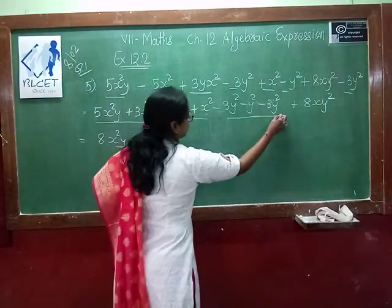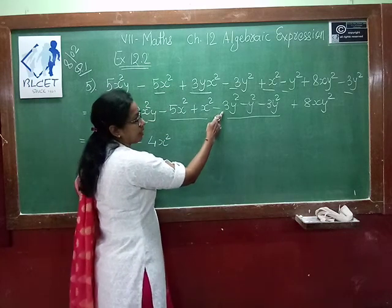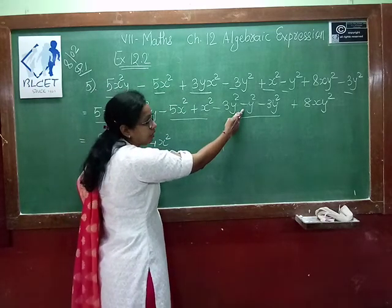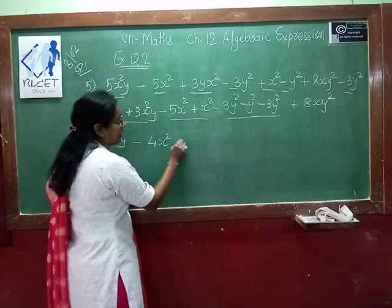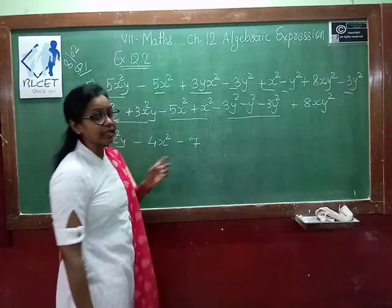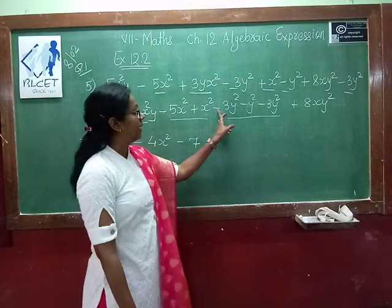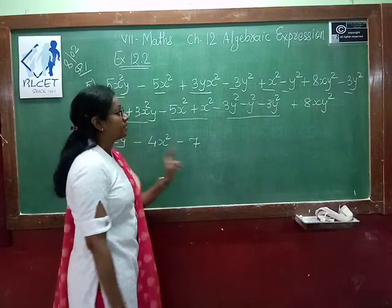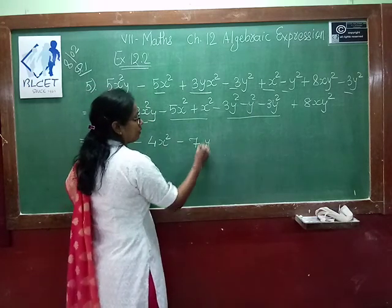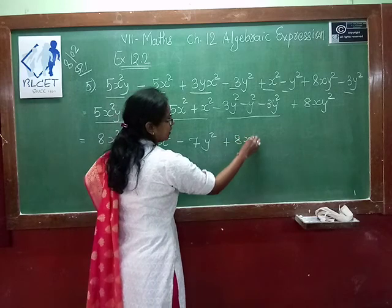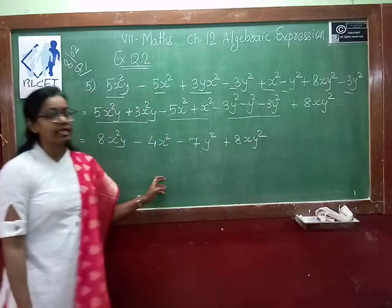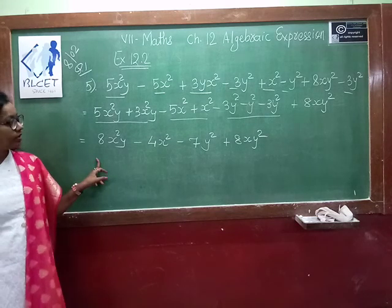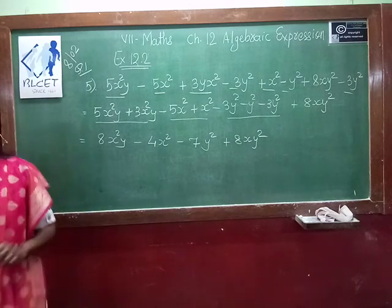Now we do the addition for the y² terms. Minus 3 minus 1 gives minus 4, and minus 4 minus 3 gives minus 7, so the variable y² gives minus 7y². And the last term we write as it is, that is plus 8xy².